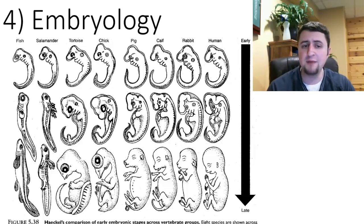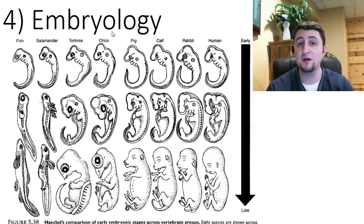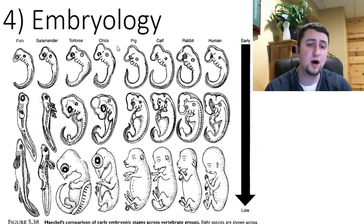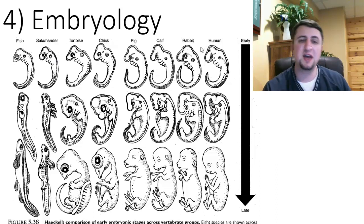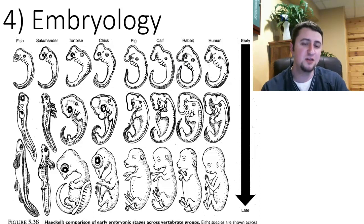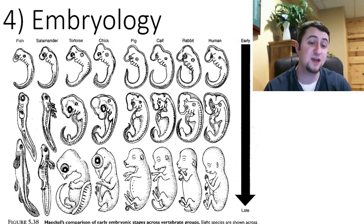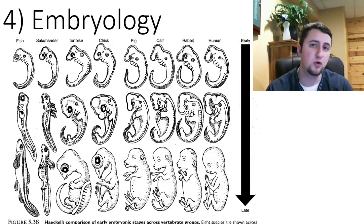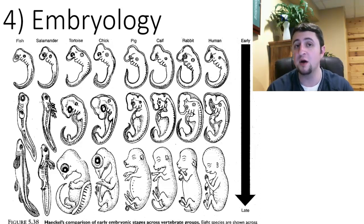Embryos — studying embryology — is another indicator of evolution. It shows that if we look at the first stage of development of embryos, a fish, salamander, tortoise, chicken, pig, cow, rabbit, and a human all look very similar. This is really cool — they all look very similar at one time in their life as embryos. But over time, as the embryo develops, it begins to look more and more like its adult form. However, the longer it takes to look more like its adult form, the more closely related those organisms are.